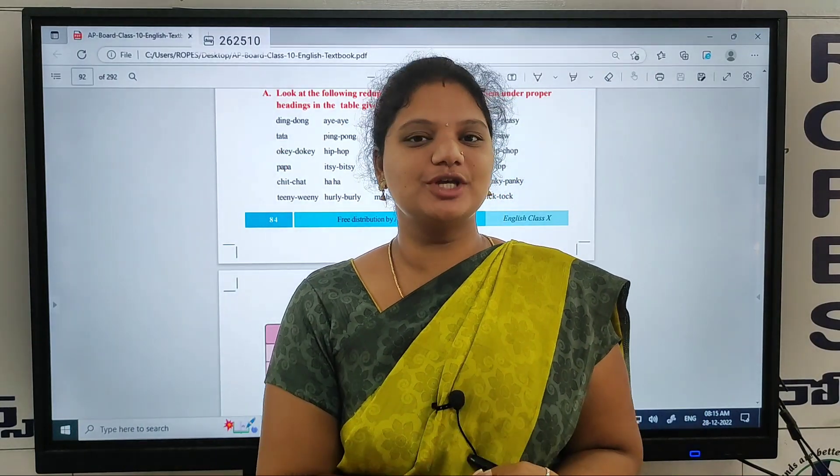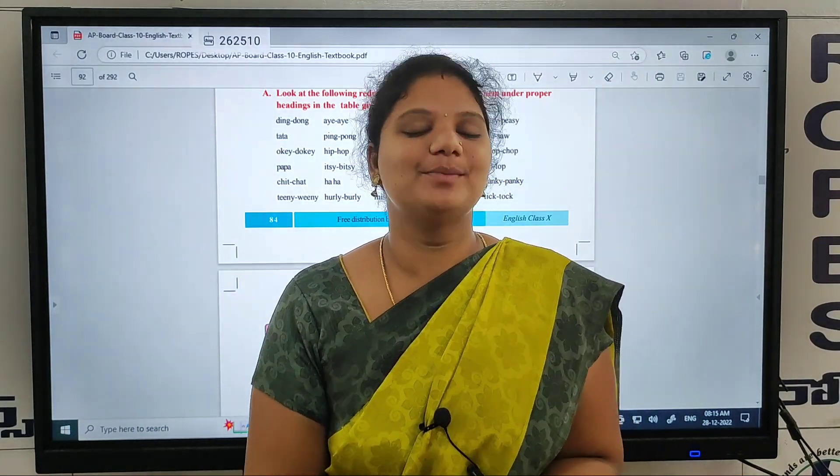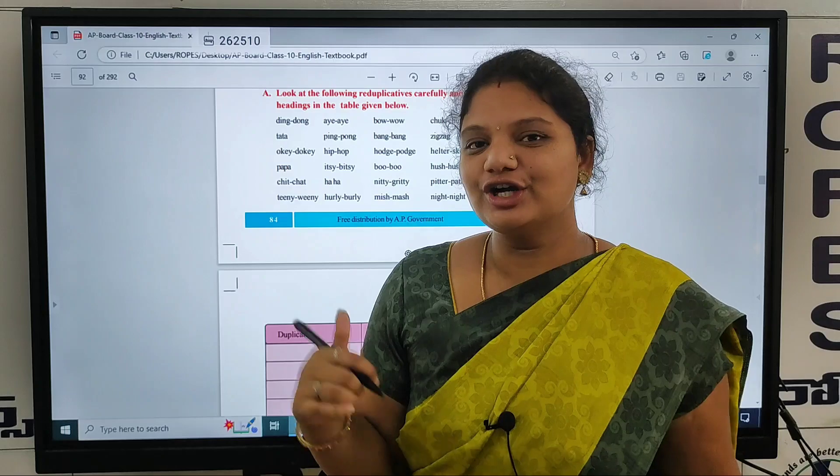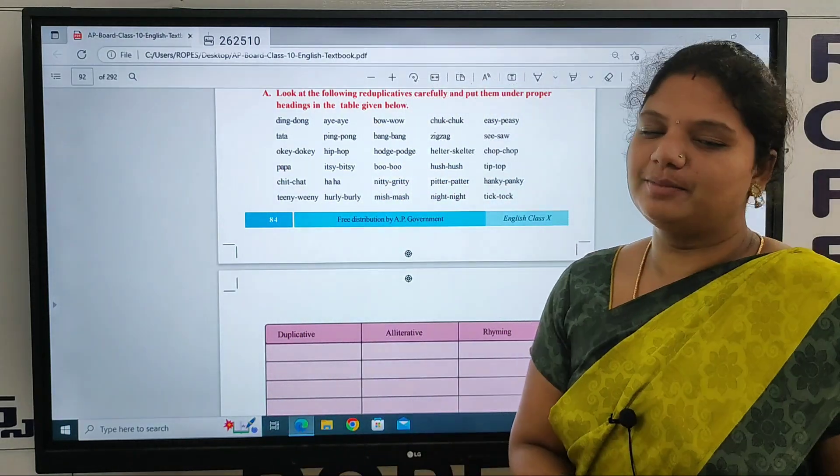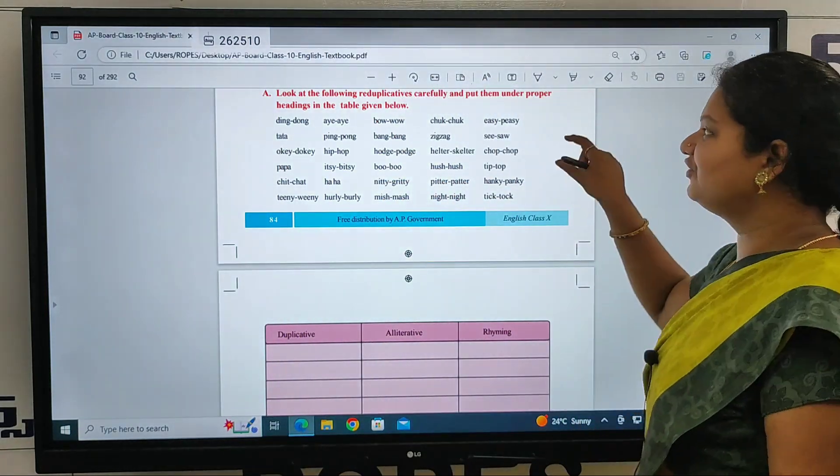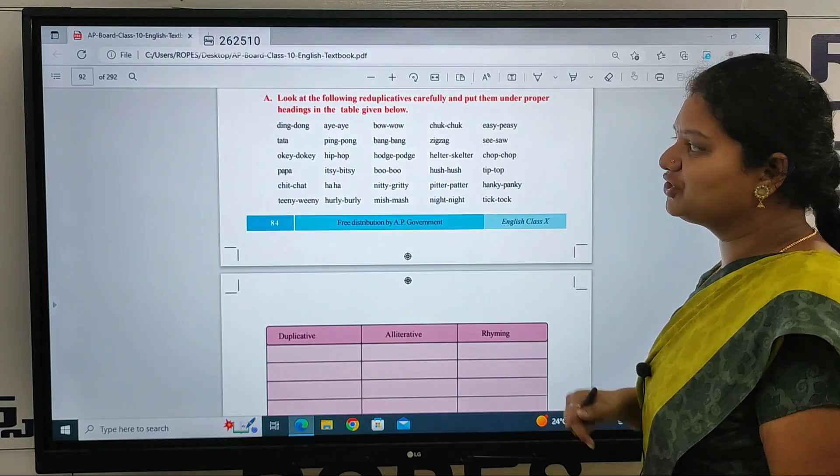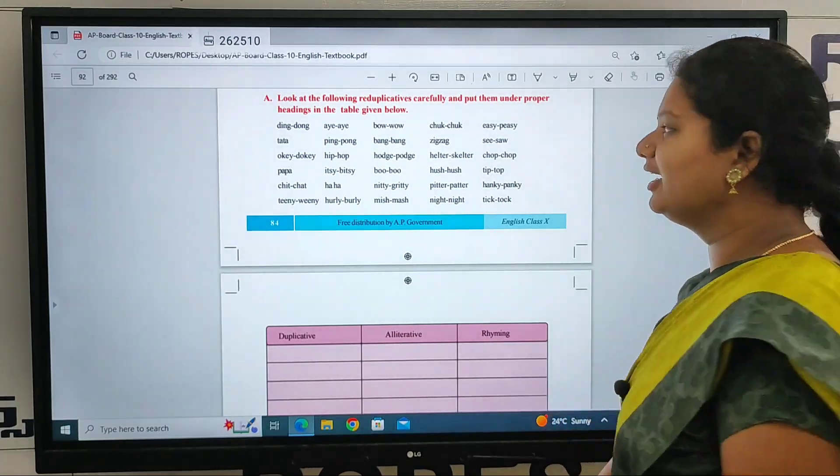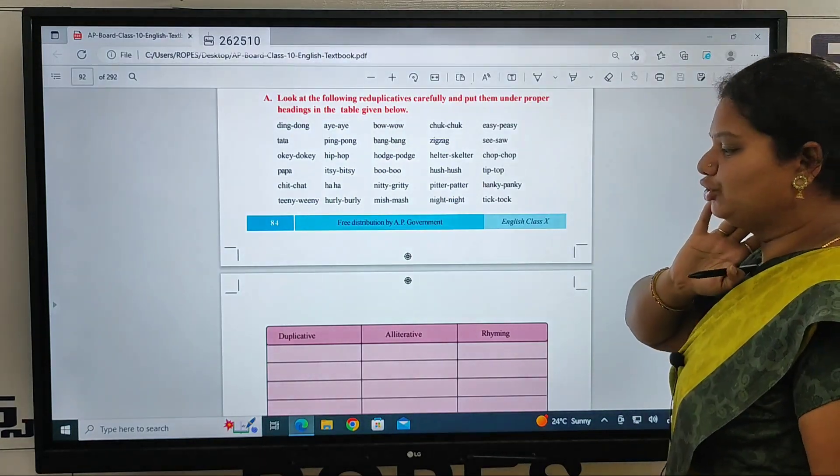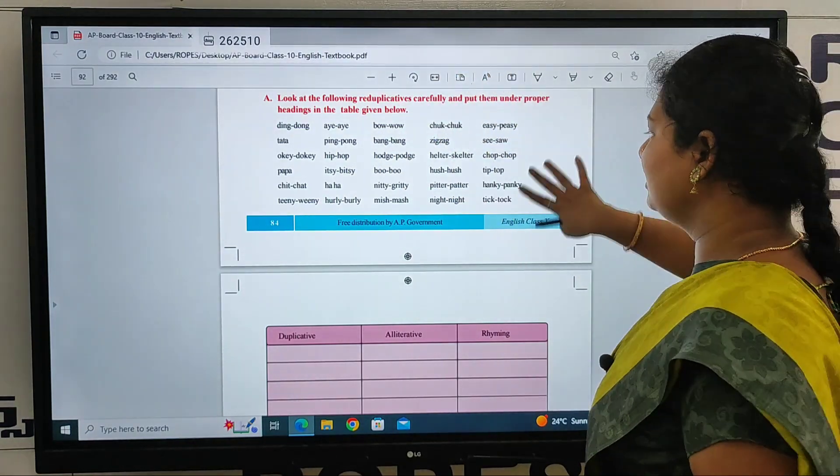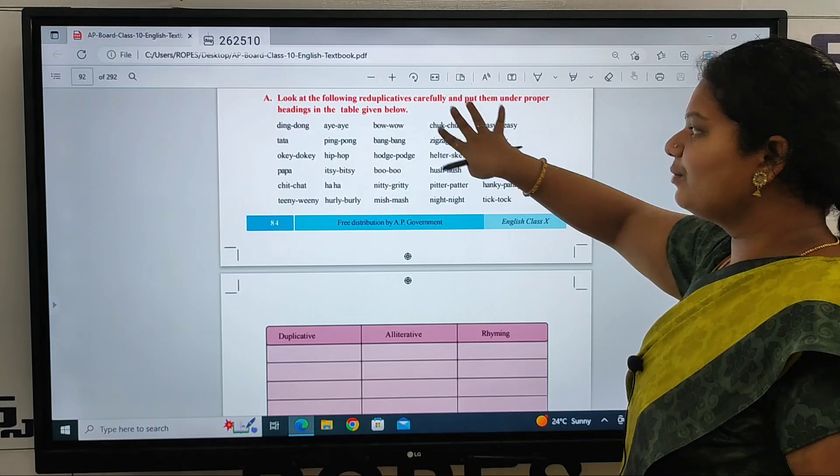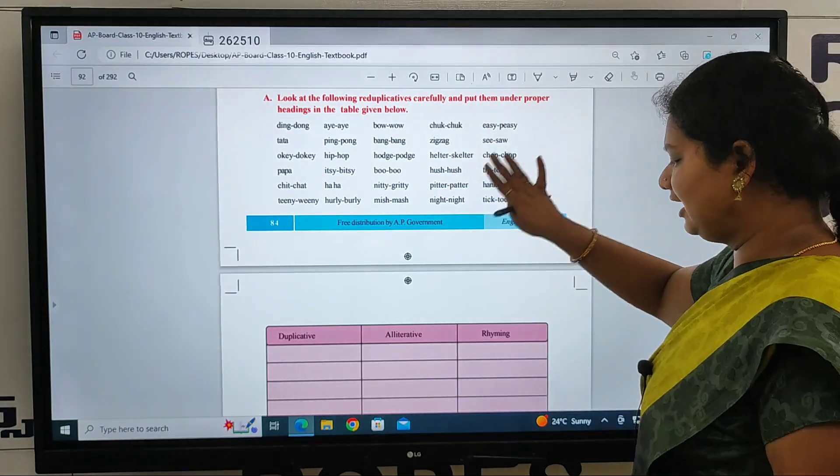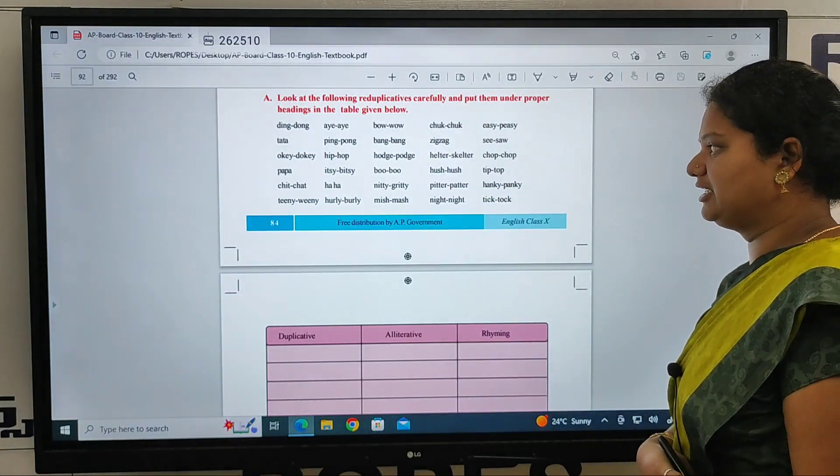Hi, hello everyone. Welcome to Ropes Organization. This is Sai Rupa. I am teaching English subject. From the before class itself, we have completed the double proportions, right? So, let's see for the, in our grammar, the last one. It is very important for two marks. Classification of words, reduplicative, alternative, and rhyming words.